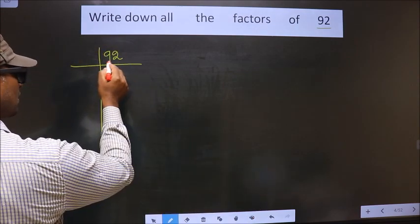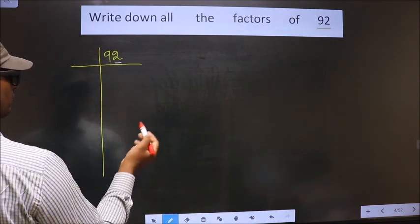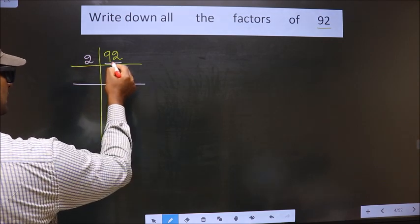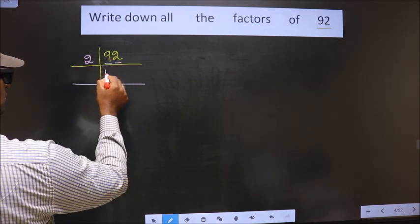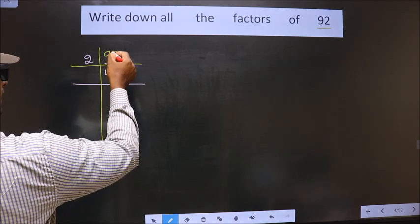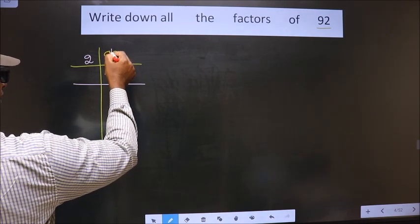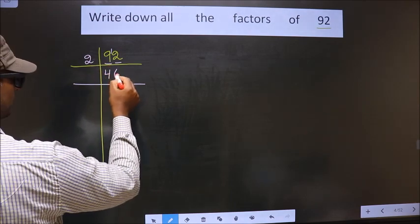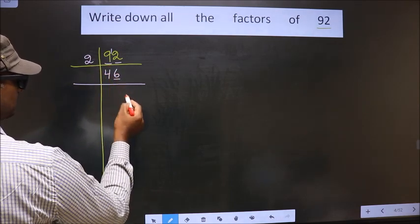Now for this number, last digit is 2 which is even, so we take 2 here. First number is 9, a number close to 9 in 2 table is 2 times 4 is 8. 9 minus 8 is 1, 1 carried forward making it 12. When do we get 12 in 2 table? 2 times 6 is 12.